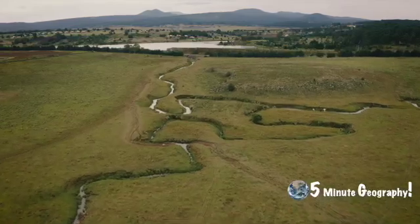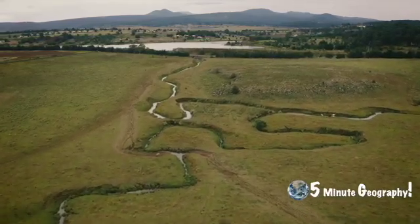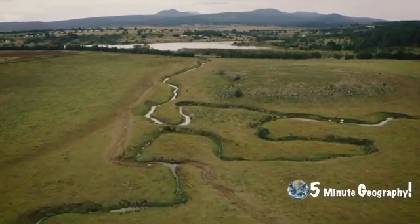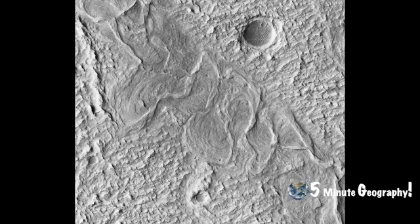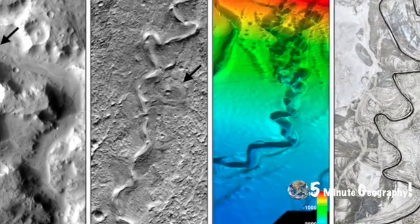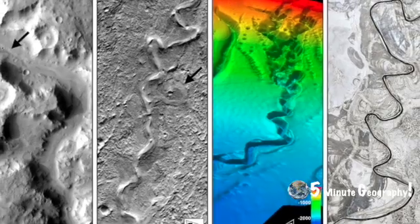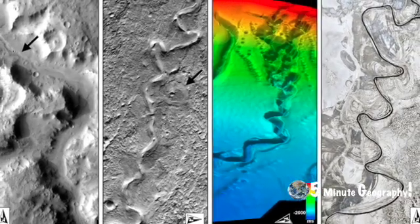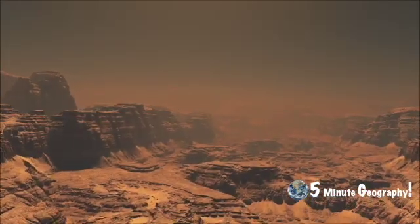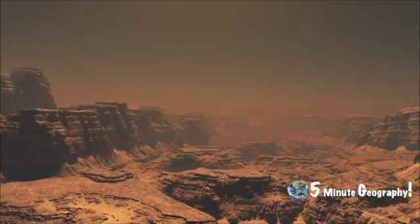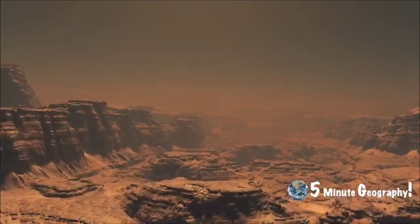Throughout the video we have seen different aerial views of meanders. The image here in front of us is taken from Mars, where we can clearly see what looks like a meandering river, leaving us little doubt that rivers once flowed on Mars.